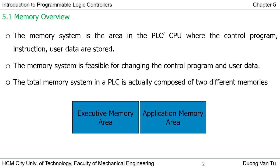The control program is prepared on software and then downloaded to the PLC, so the memory will store your control program. The instructions are made by the manufacturer and stored in hidden memory in the PLC. Finally, when the user is working with the PLC, it generates data that is stored in memory for further use.